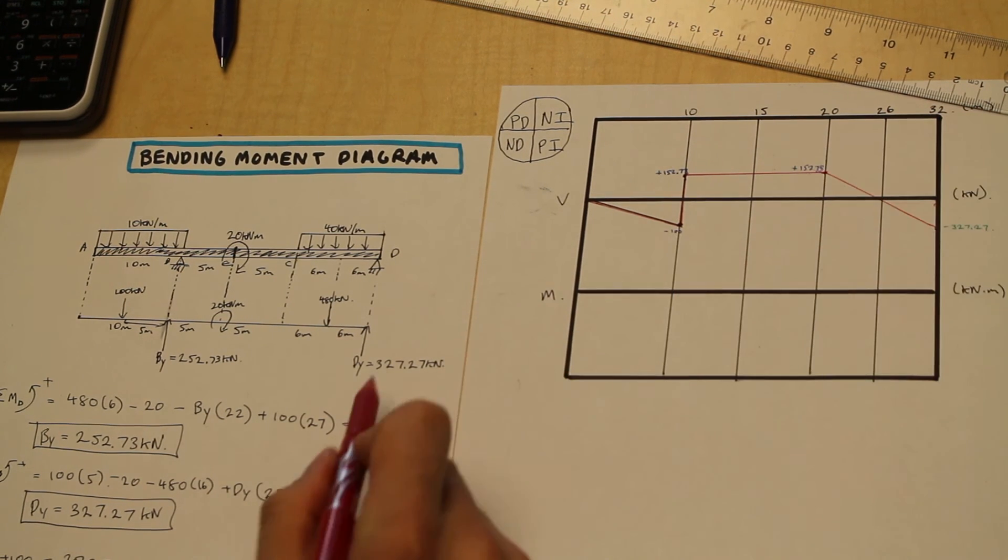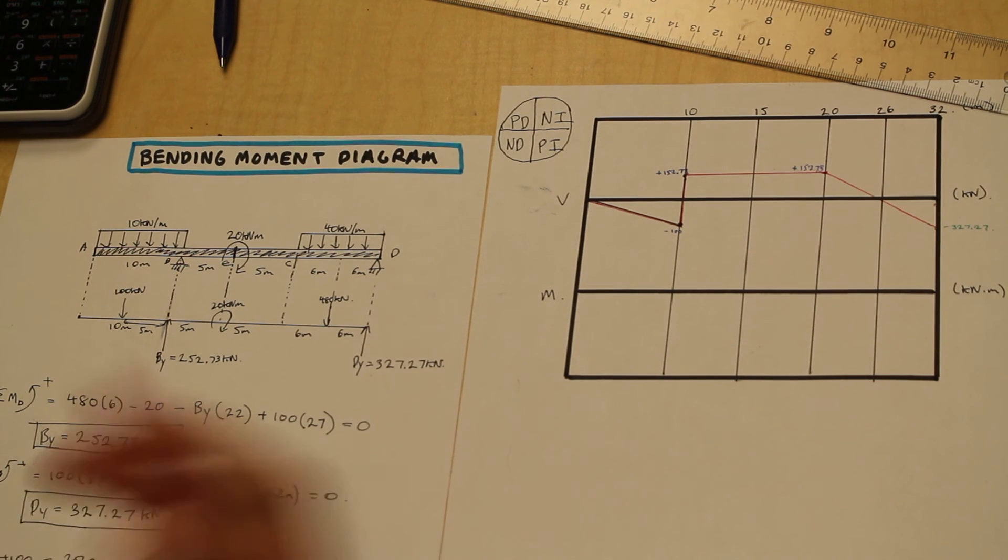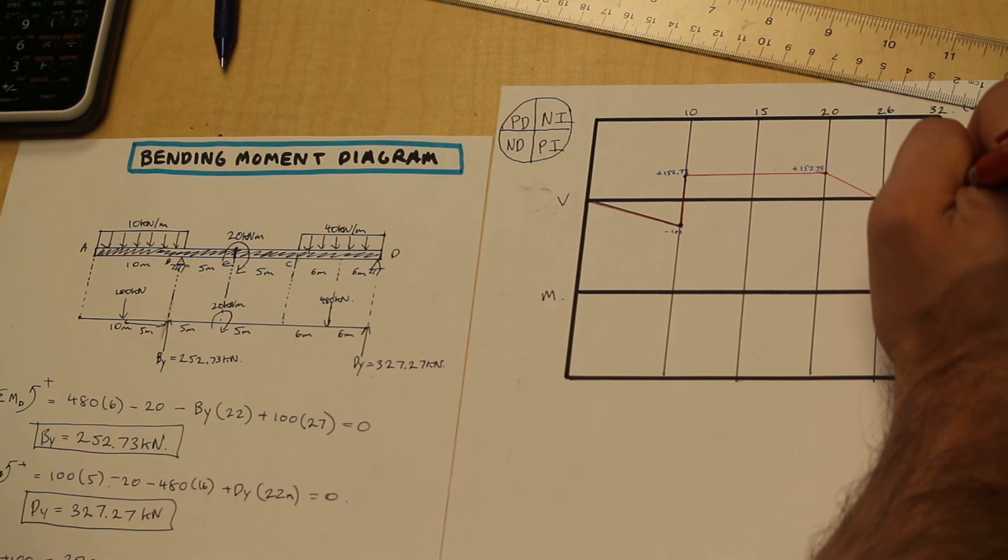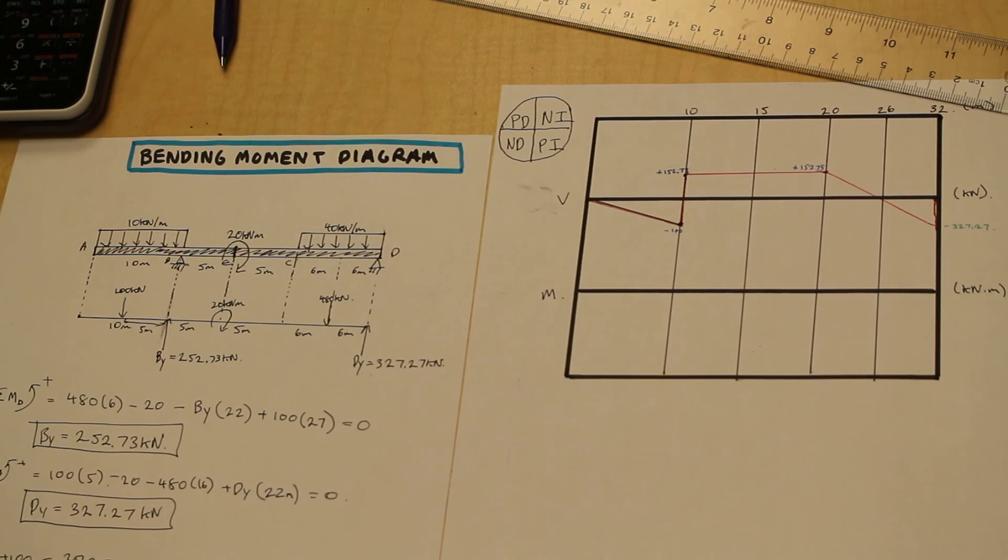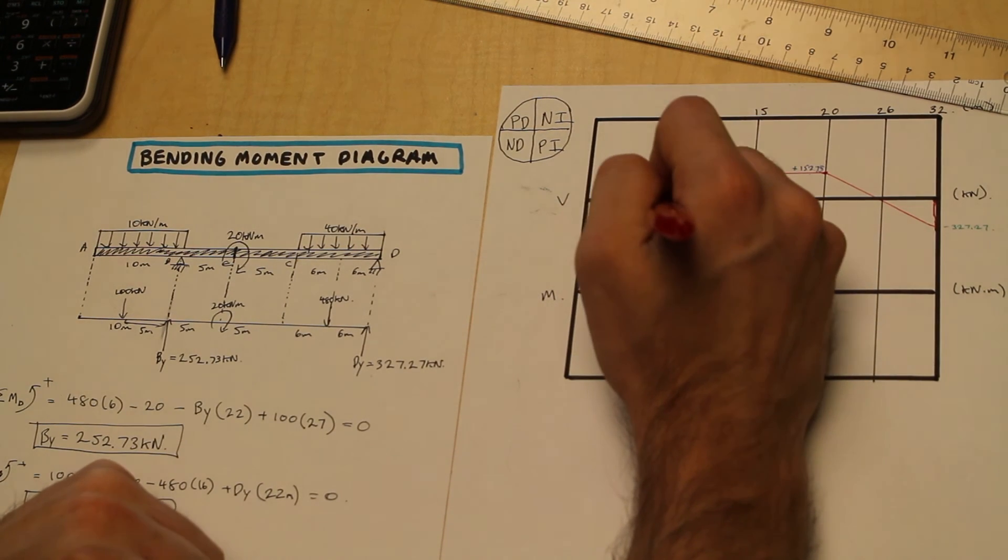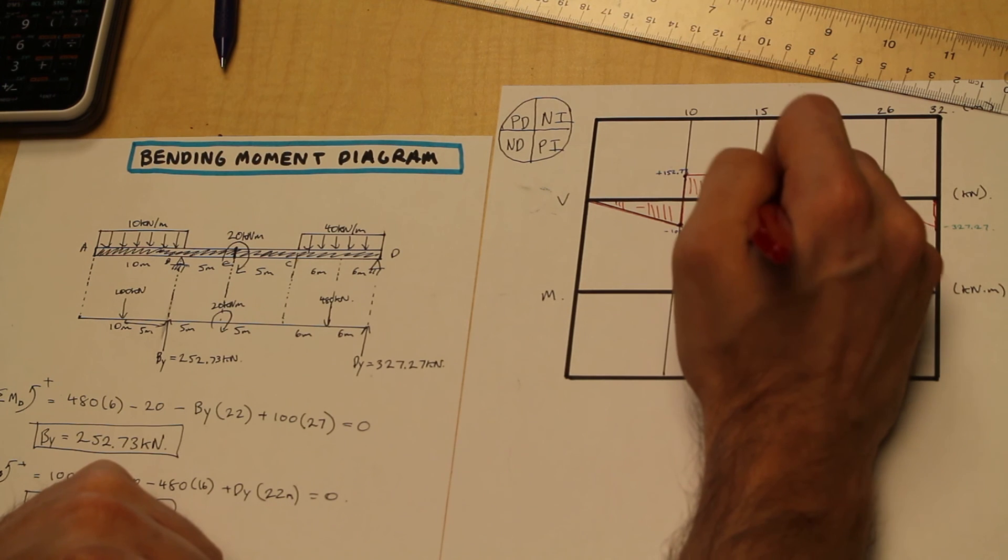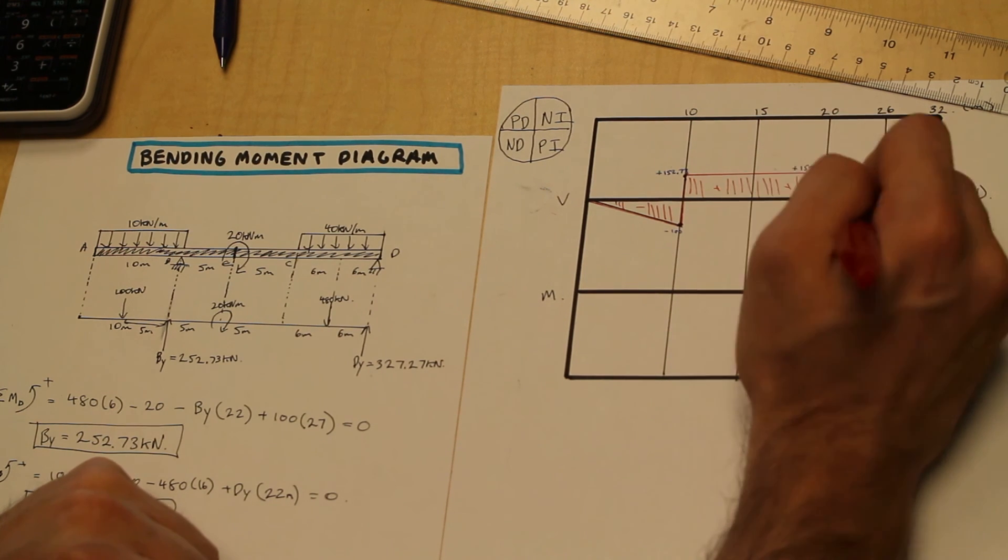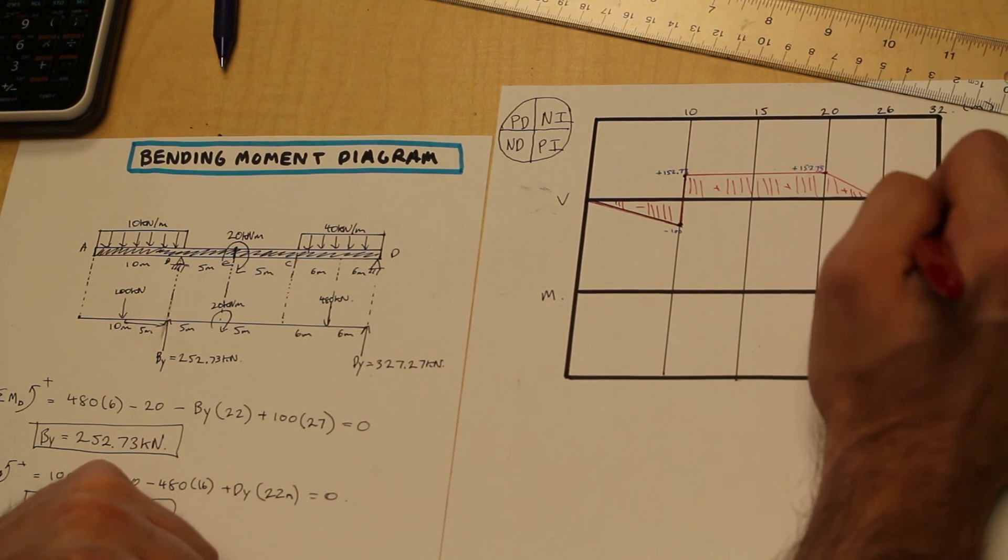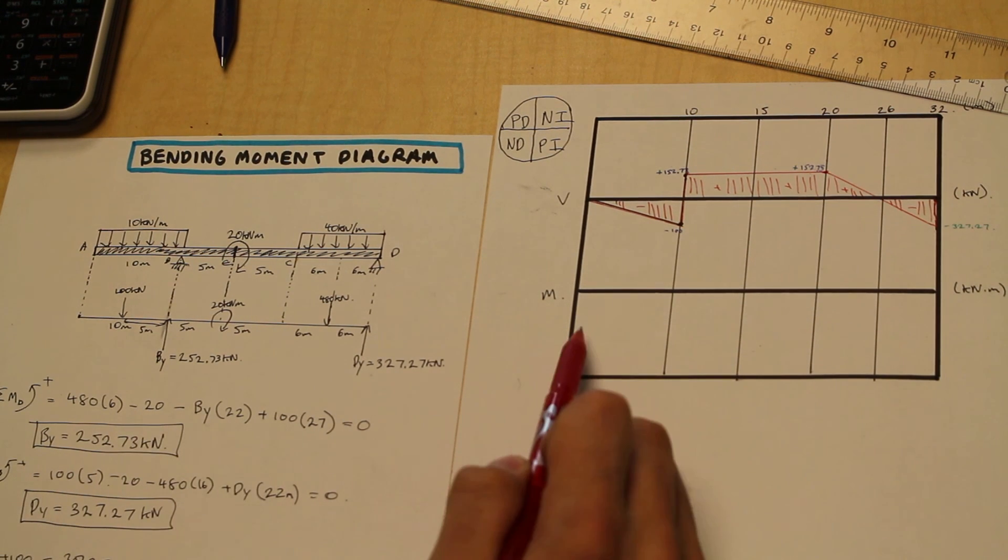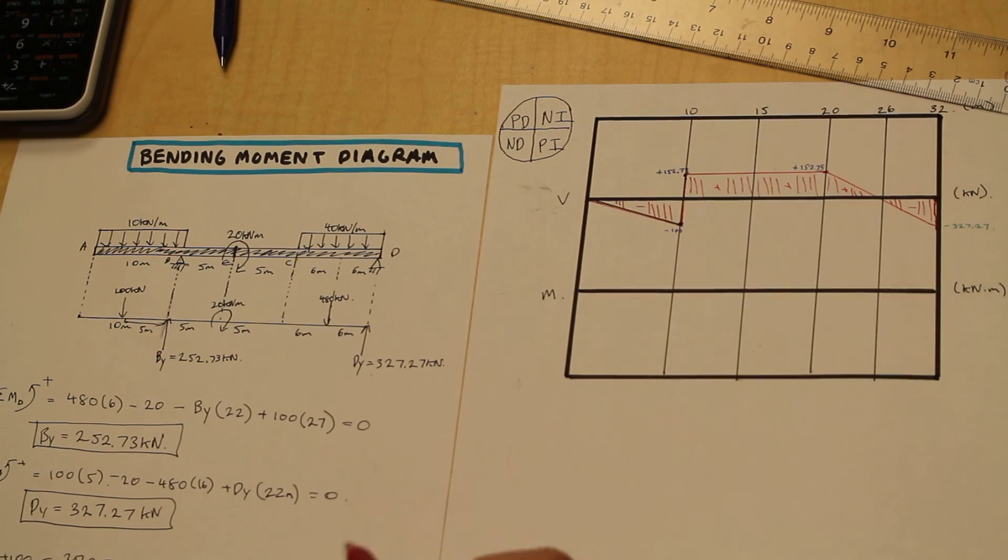And as we can see, our reaction at D is 327.27 kilonewtons. So that's going to take us up to zero. And if you want to make it look nice, we can draw some lines in here with these symbols. Like that. And that is the shear diagram. Next, we are going to draw the moment diagram. Stay tuned to the next video for that.